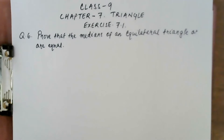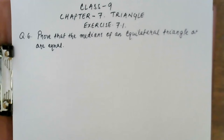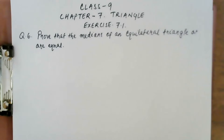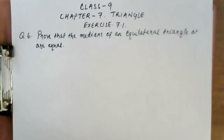First of all, you need to understand what is an equilateral triangle. Equilateral triangle means a triangle where all three sides are equal. In geometry, the first and most important step is the figure or diagram, so let's draw the figure according to the question.